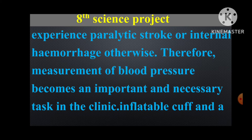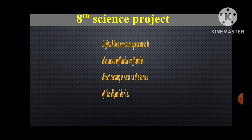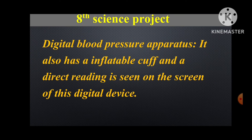The sphygmomanometer has an inflatable cuff and a machine with two tubes. One tube is connected to the pressure hand-control bulb and the other tube to the pressure gauge. The cuff is tied to the arm of the patient. The 120/80 digital blood pressure apparatus also has an inflatable cuff and a direct reading is seen on the screen of this digital device.